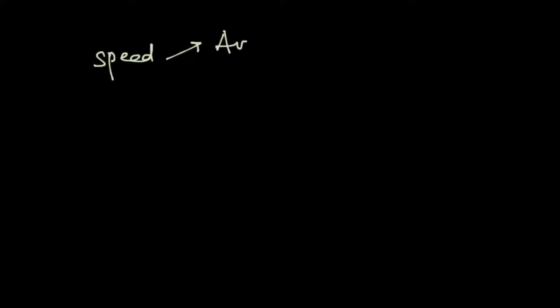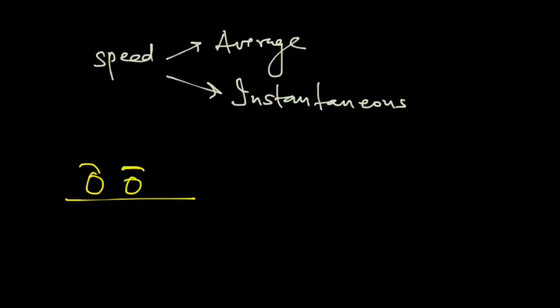These are the important points about speed. Now speed is of two kinds. The first type is what we call the average speed, and the second type is called the instantaneous speed. Let us understand the differences between the two. Imagine that you are riding a bike and you are going from point A to another city B.